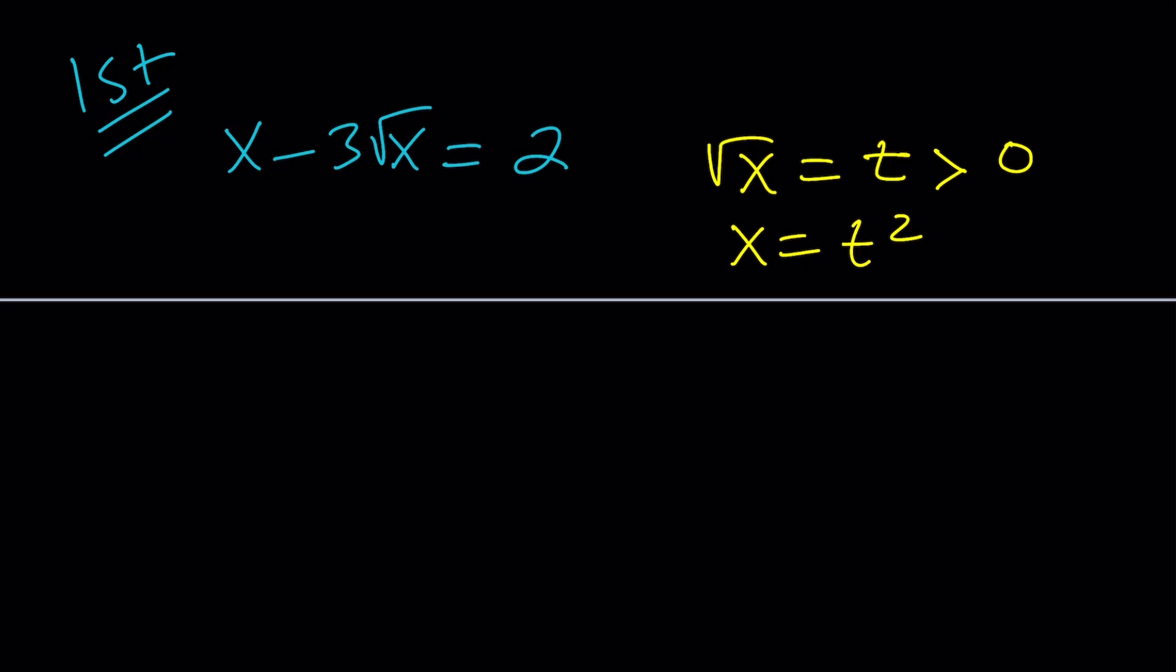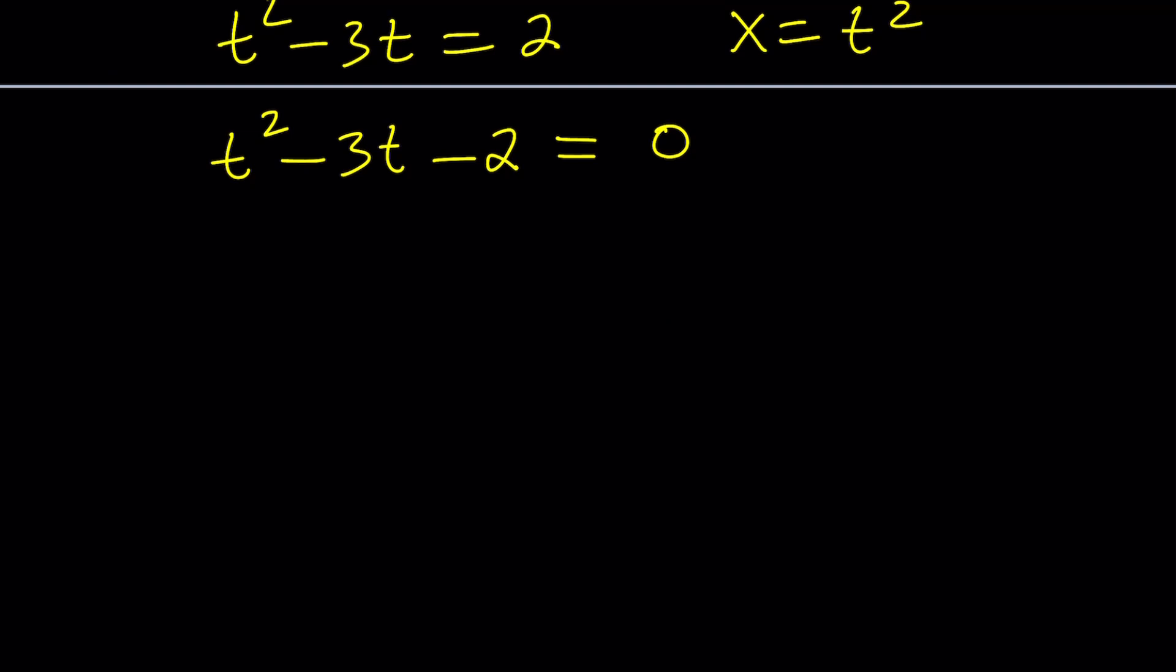If you do that, you get x equals t squared, and you impose the requirement that square root of x is greater than or equal to 0. Obviously, in this case, x or t cannot be 0 because that's not going to satisfy the equation. So we can say that square root of x or t must be positive. Let's go ahead and see under those conditions what we can do.